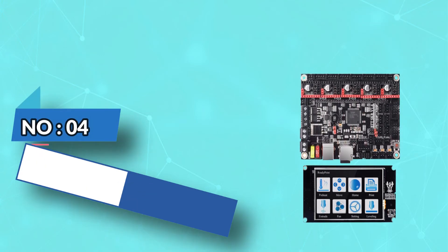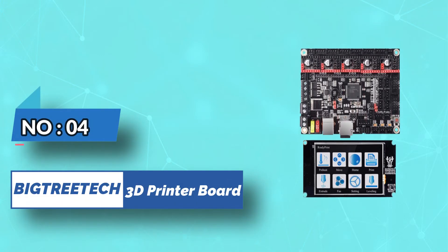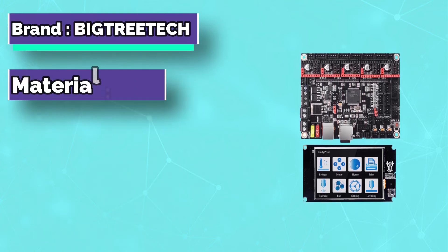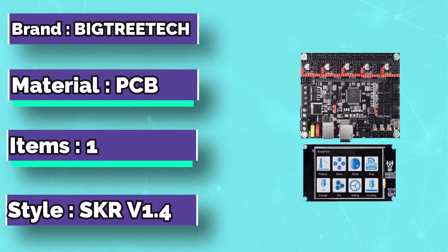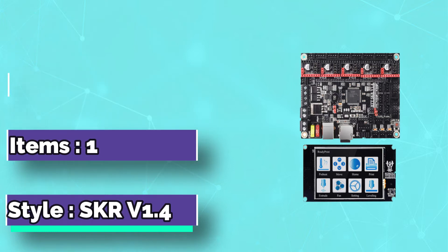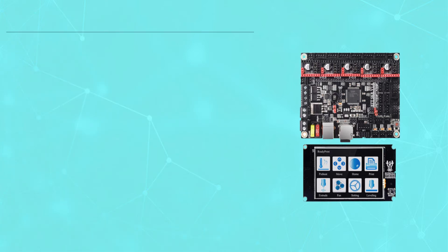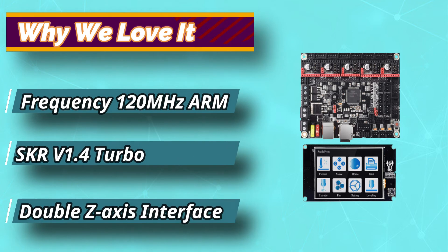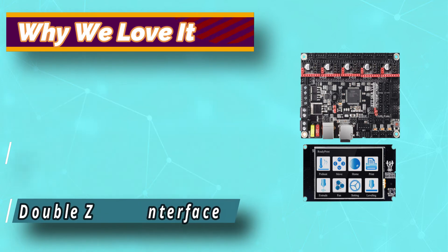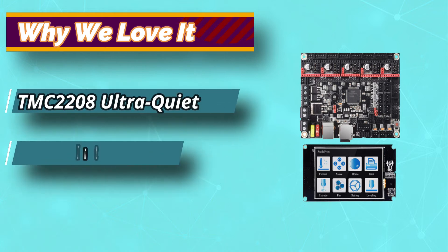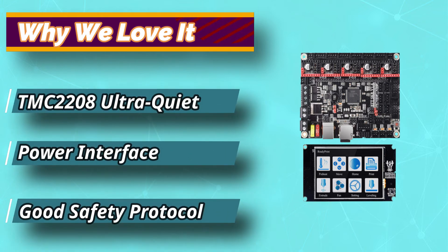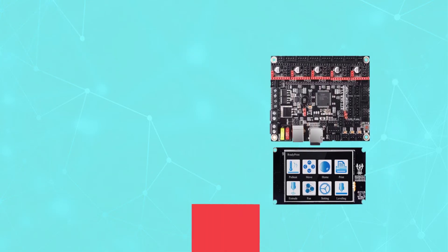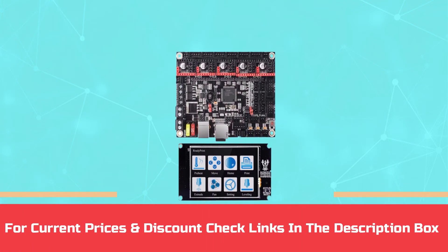Number 4: BigTreeTek 3D Printer Board. If you are looking for a quality and expensive upgrade of your 3D printer controller, the BigTreeTek Direct SKR V1.4 Turbo is the one to go for. This unit's power input can either be 12 or 24 volts. By buying this controller, you get to enjoy an ARM Cortex-M3 CPU microprocessor which makes the board function pretty fast. For current prices and discounts, check links in the description box.